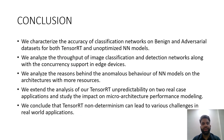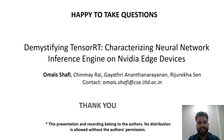To conclude: we characterized the accuracy of classification networks for both benign and adversarial datasets, analyzed the throughput of image classification and detection networks along with concurrency support, and analyzed the reasons behind anomalous behavior of neural network models on architectures with more resources. We extended this analysis to two real-world applications and studied the impact on microarchitectural performance modeling. Finally, we conclude that TensorRT non-determinism can lead to various challenges in real-world applications. Thanks for listening.